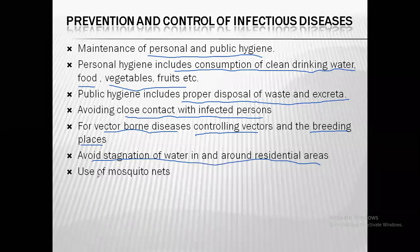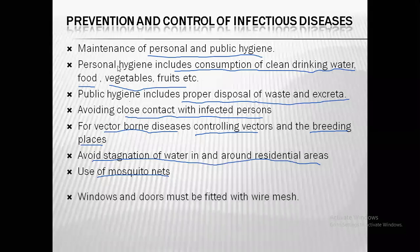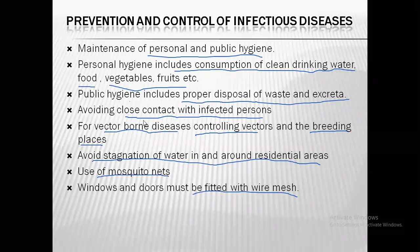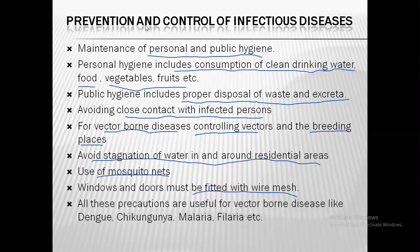Try to eliminate stagnant water from your home, as it can be a breeding ground for mosquitoes. Use mosquito nets where other measures are not available — they are especially useful for poorer communities. Windows and doors should be fitted with wire mesh so insects cannot enter the house. All these precautions are useful for vector-borne diseases like dengue, chikungunya, malaria, and filaria.